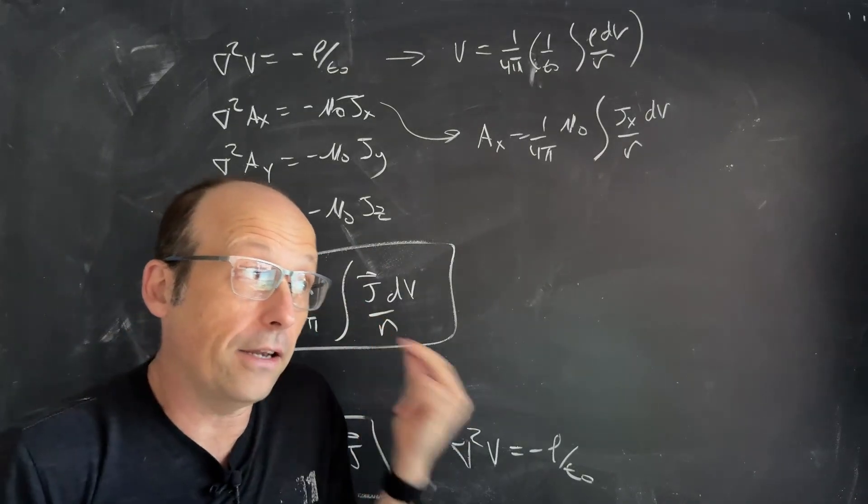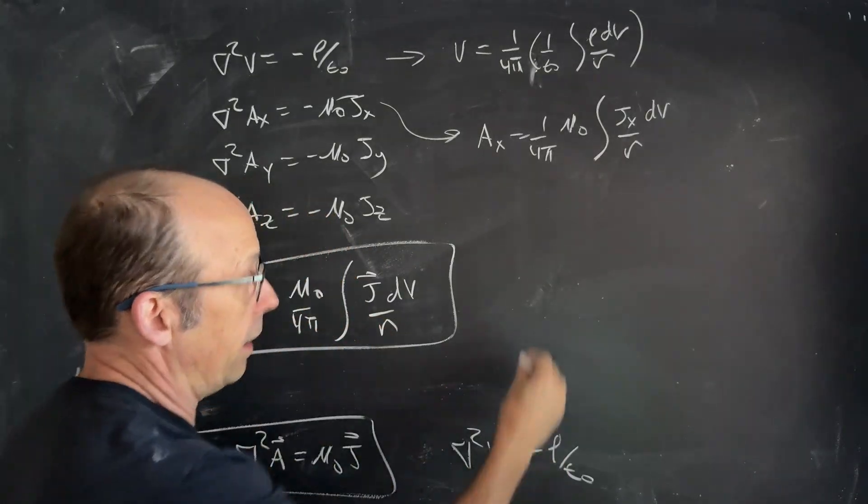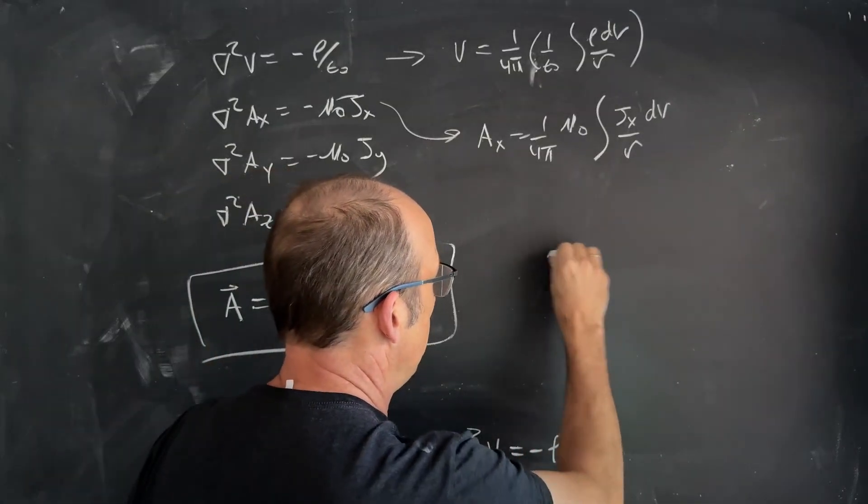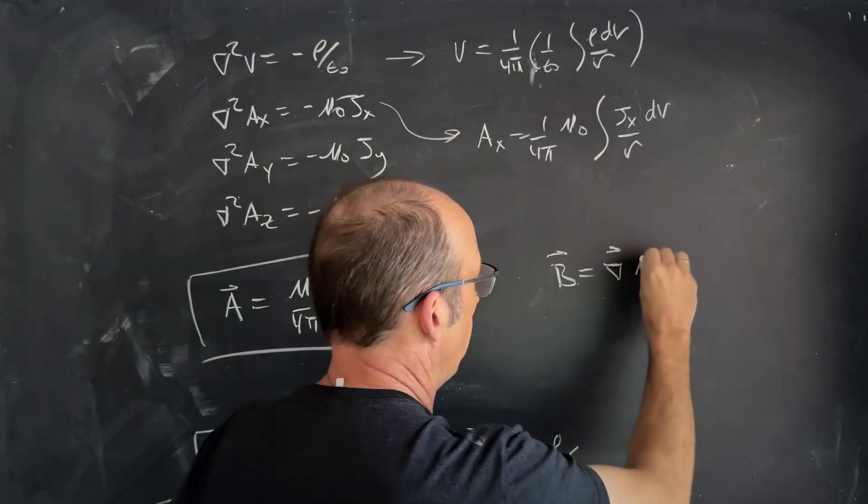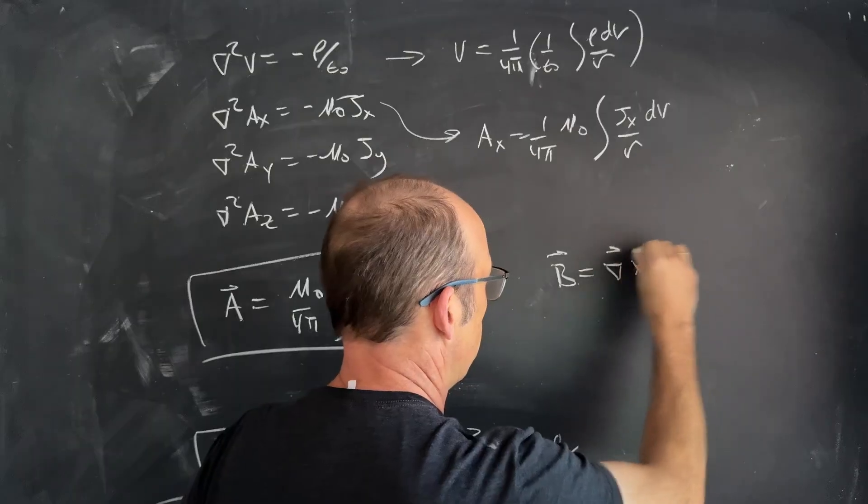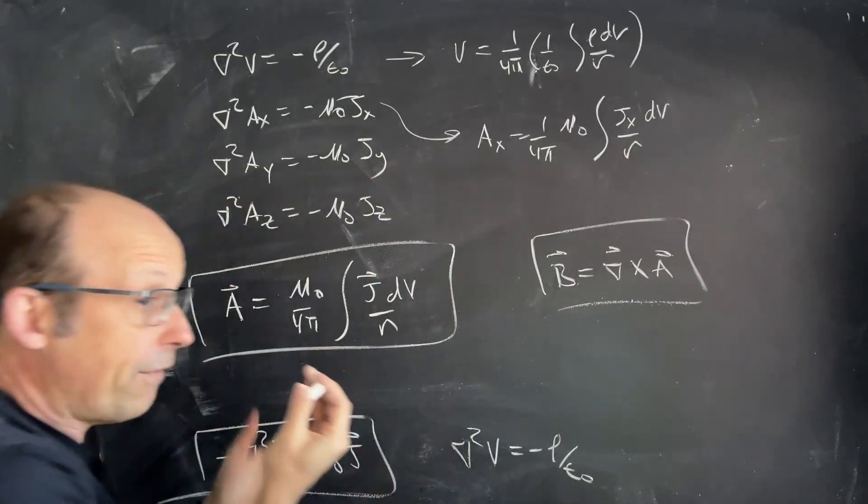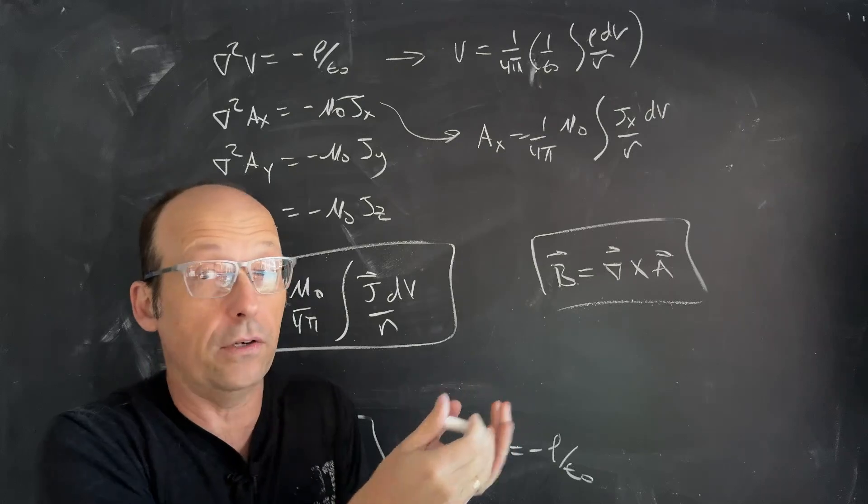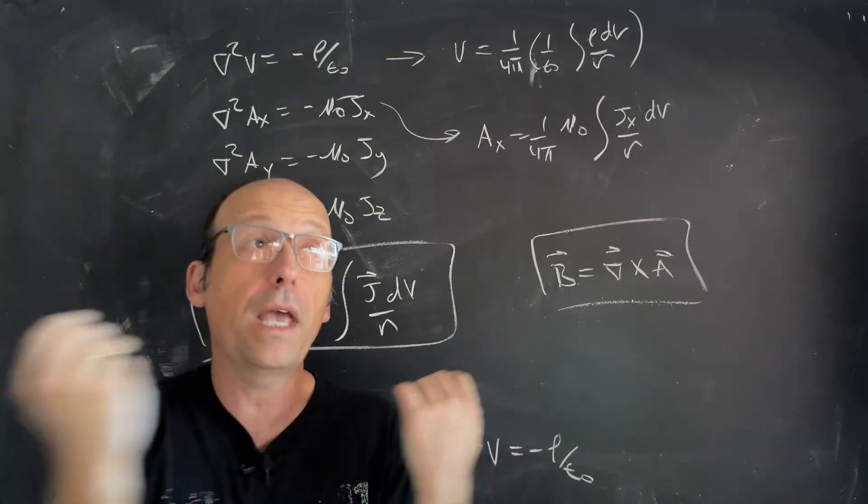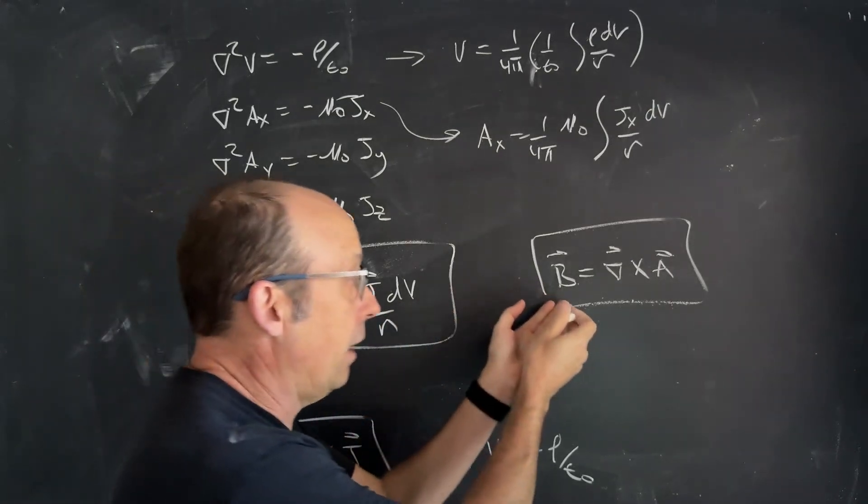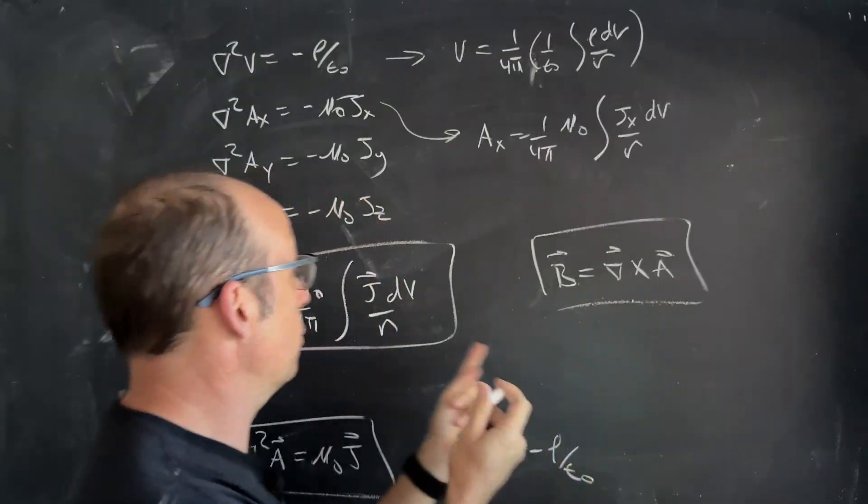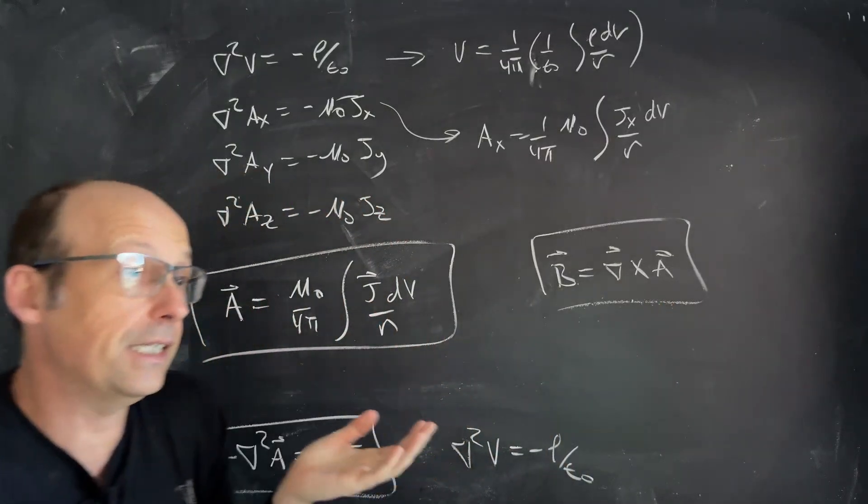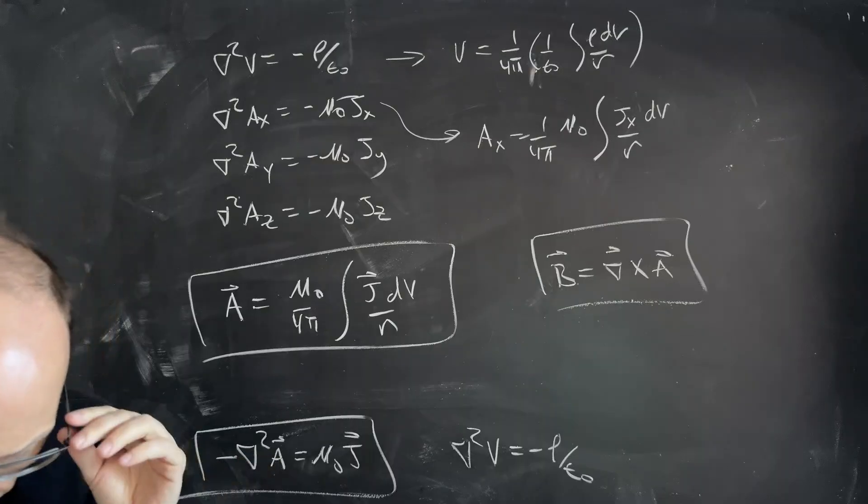So, if I know the vector potential, then I can find the magnetic field. So, I can go back over here and say B is the curl of A. So, now we have an analogous system for our electric potential, electric field, electric charge density. We have the same thing with magnetic field, magnetic vector potential, and the current density. And so, this is the whole thing that we're talking about here.